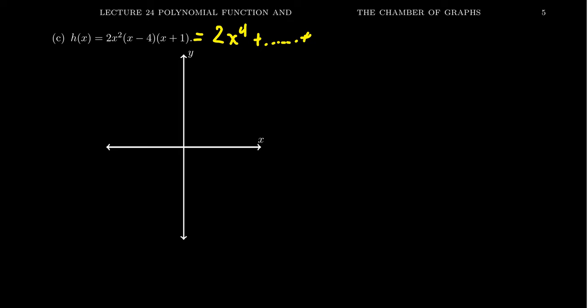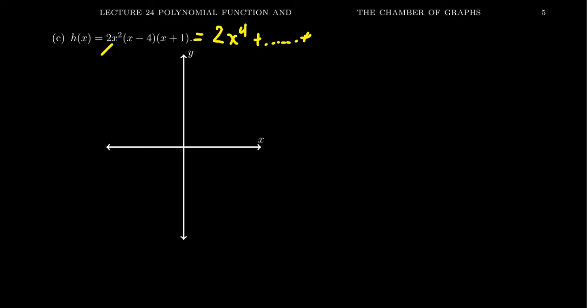If I look at the constant term, you're going to get a 0, because after all, if you expand upon this, it really looks like 2 times x plus 0 squared. You're going to get a 0 times negative 4 times 1. The constant term is going to be 0, so our function's y-intercept is actually going to be an x-intercept. We're going to go through the origin on this graph.